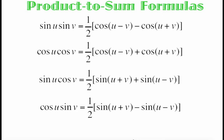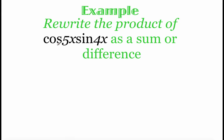The first set of formulas we're looking at are called product to sum formulas. Just like the name implies, we're going to be given some sort of multiplication happening with either sines or cosines and we're going to rewrite that as some sort of addition problem. These formulas are on your trig sheet on the bottom right hand corner, so no need to copy them down. The first example says cosine of 5x times sine of 4x, and we're going to rewrite that product as either a sum or a difference.